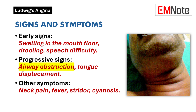The early stage of Ludwig's angina is characterized by swelling in the floor of the mouth, which can elevate the tongue, making it difficult for patients to swallow saliva. This often results in drooling and impaired speech. As the condition worsens, there is a significant risk of airway obstruction due to the hardening of the spaces surrounding the tongue.